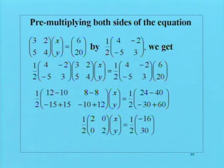The left-hand side of the equation can be simplified as 1/2 into (12 - 10, 8 - 8, -15 + 15, -10 + 12) times (x, y), which equals 1/2 into (24 - 40, -30 + 60). When that line is further simplified, we have 1/2 into (2, 0, 0, 2) times (x, y) equals 1/2 into (-16, 30).